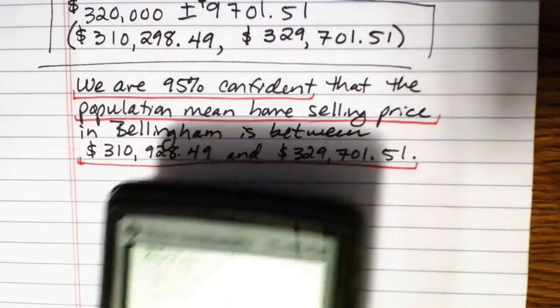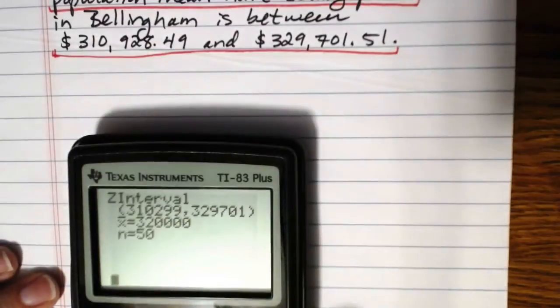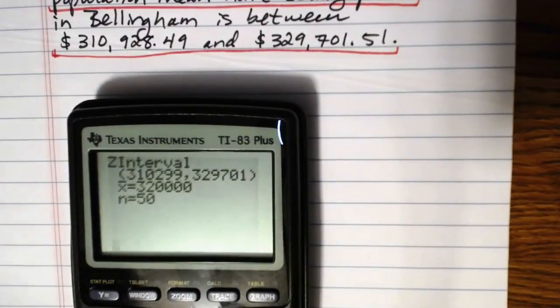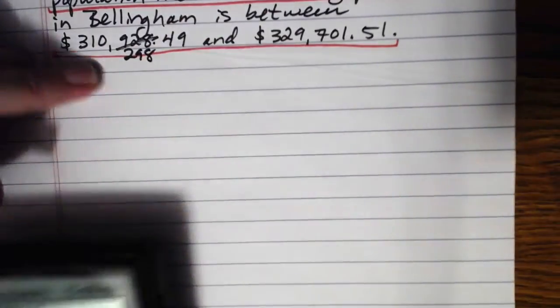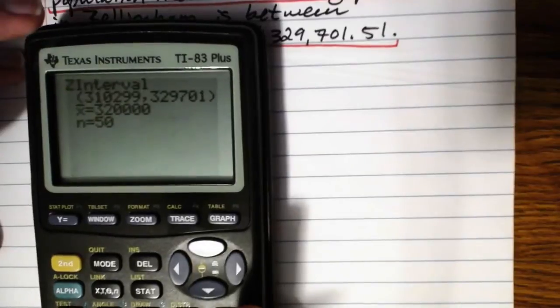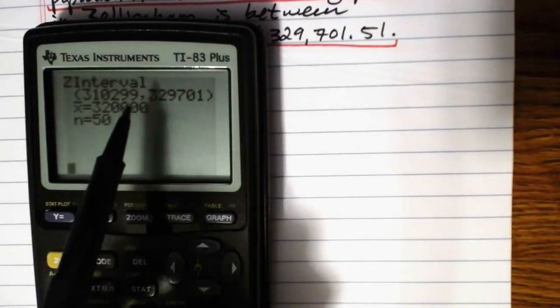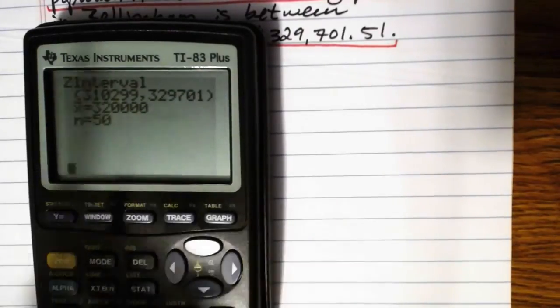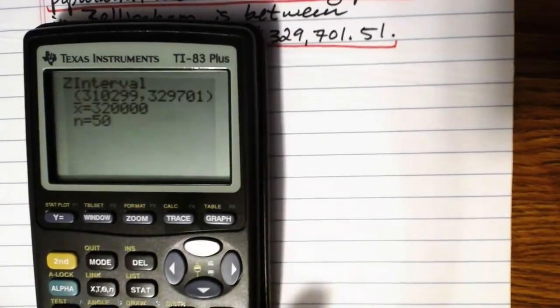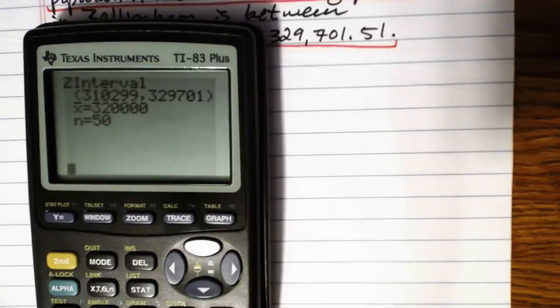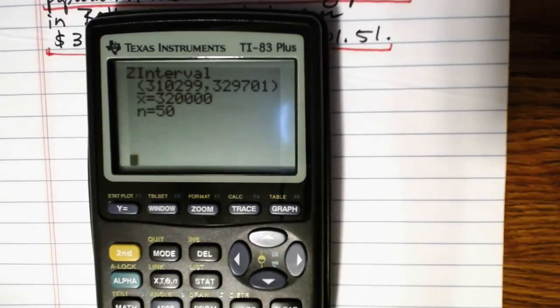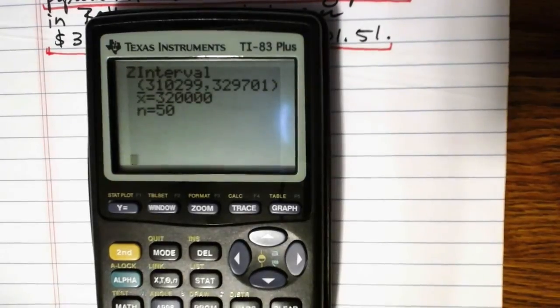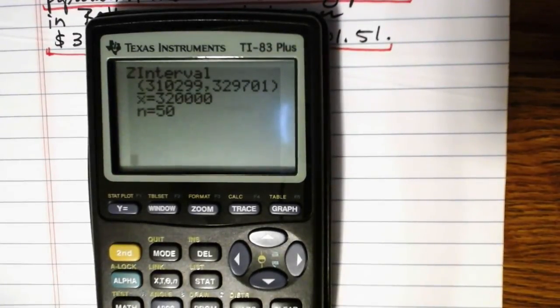And here what you'll notice is that they've rounded a little bit. We had $310,298. Here we just get the rounded versions of those. So $310,299, they rounded up there, and $329,701. So there's some rounding error there. But basically, it's the exact same interval. And that's what you'll find. Sometimes your by-hand computations will be a little bit different from the calculator due to rounding. But certainly, if you want to use the calculator, it does save a lot of time. Especially as we progress through this section, the by-hand computation formulas are going to get a lot more complicated. They're going to have a lot more values to put in. And it's so much quicker and easier and usually more accurate to use the calculator.